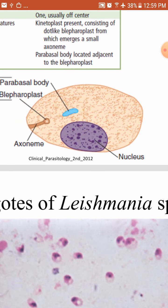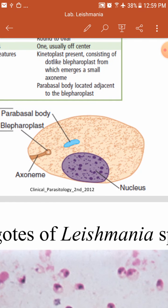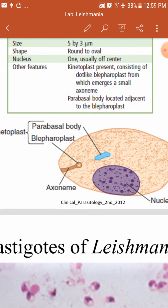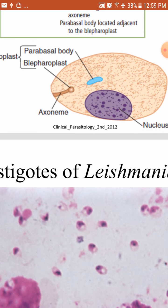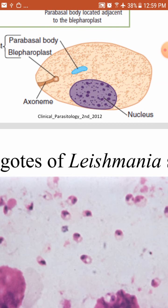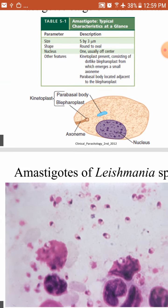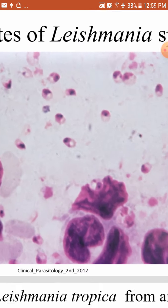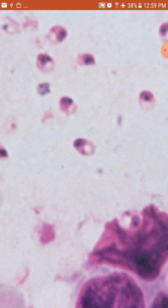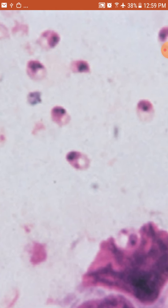The amastigote is oval or round in shape. It contains a single large nucleus that is located eccentrically. It also contains a kinetoplast, from which the axoneme extends — but there is no flagellum; the flagellum does not exist in the amastigote. On a Giemsa-stained slide, this is what the amastigote of Leishmania species looks like — the slide is filled with amastigotes, which are oval in shape.